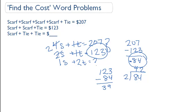So now we know that a tie costs thirty nine dollars. What we want to do is add forty two plus thirty nine plus thirty nine, and we get a total of one hundred and twenty dollars.